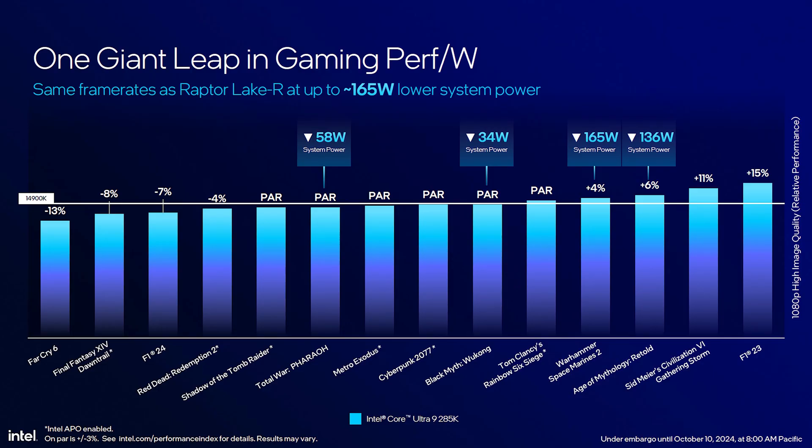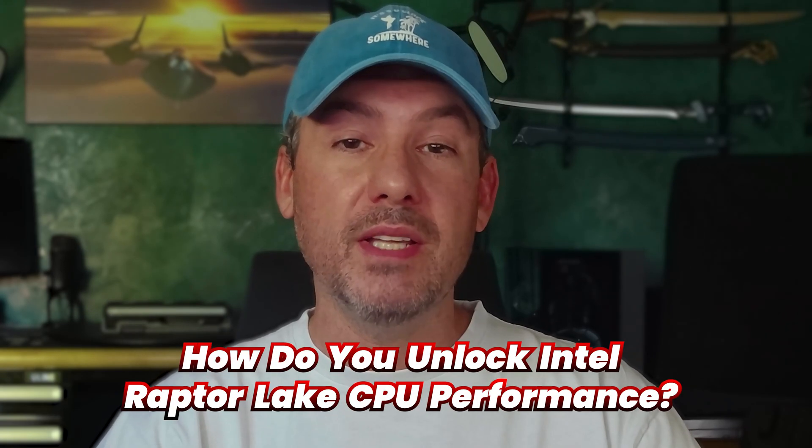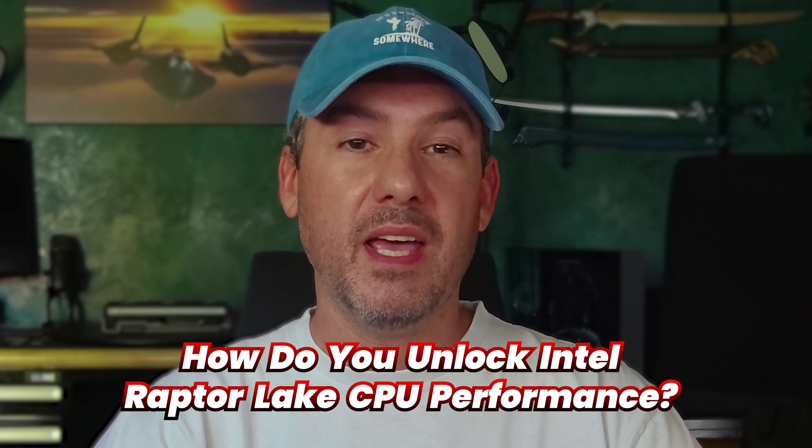The 14900K has been Intel's top performing consumer chip since its launch in late 2023, and based on benchmarks against the new Intel Core Ultra 9 285K, it looks like it will continue to be for some time. A question many of you have asked is how do you unlock the performance of a 14900K? There are a few important tweaks you should consider to unlock the true potential of any Raptor Lake CPU.